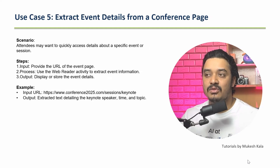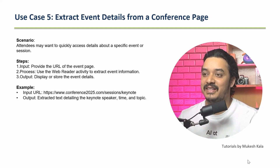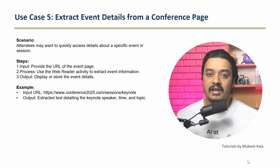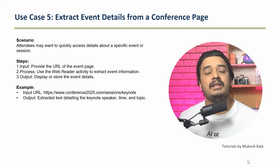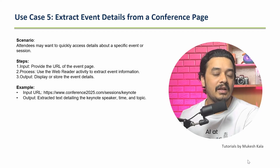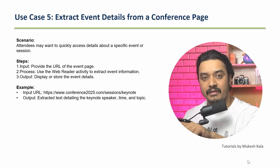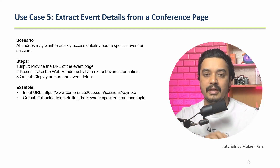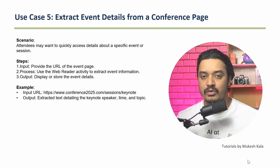The last use case is extracting details from a conference page. For example, there is a conference with a very large agenda and you want to know if it covers anything for RPA and UiPath developers. You can provide the URL of the complete agenda, ask it with a simple prompt, and get the output. By using just one or two activities you can cater to many use cases. Now let's go back to UiPath Studio. Please open your UiPath Studio — it's absolutely free, community edition works too.